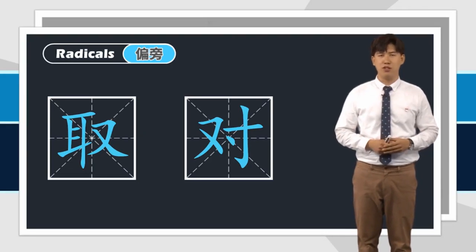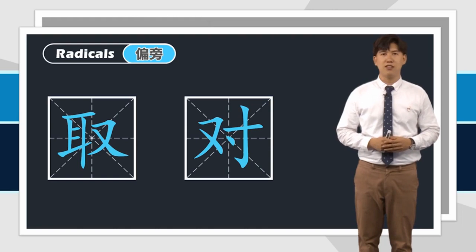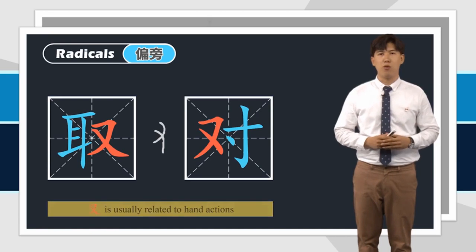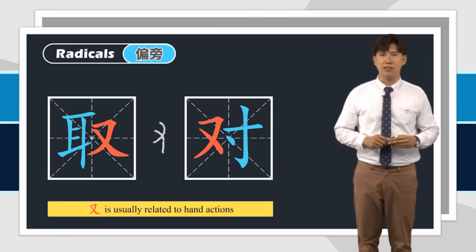Let's move on to some knowledge of Chinese characters. Today we will learn two new radicals. The first one is 右字旁. The original form of it is like a right hand, so Chinese characters with 右字旁 are usually related to hand actions.